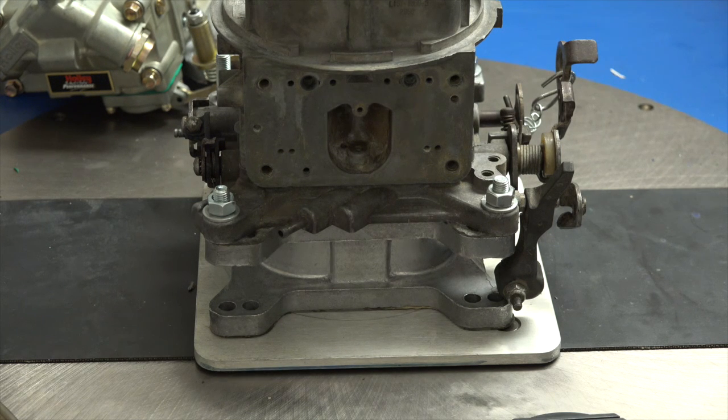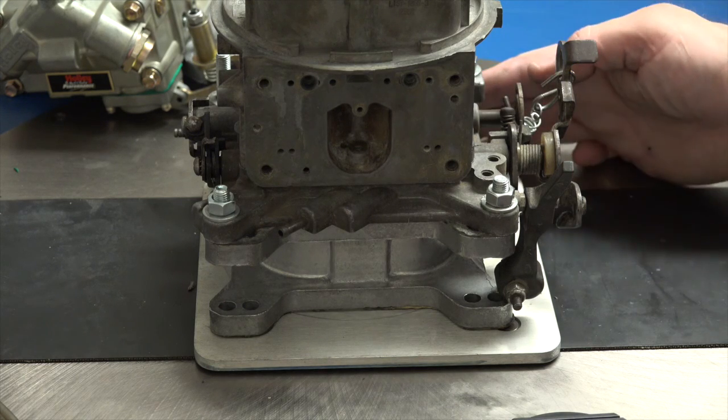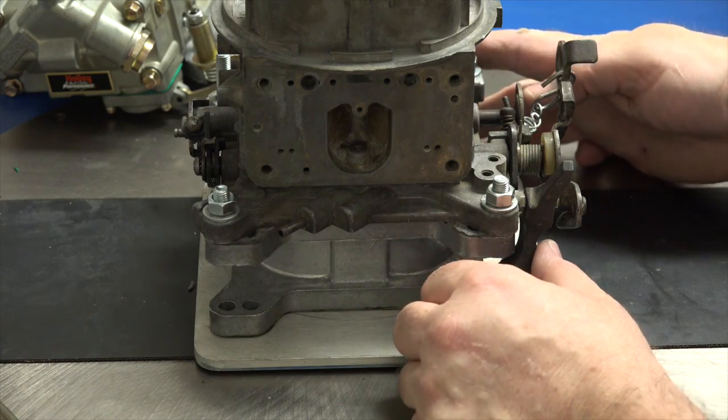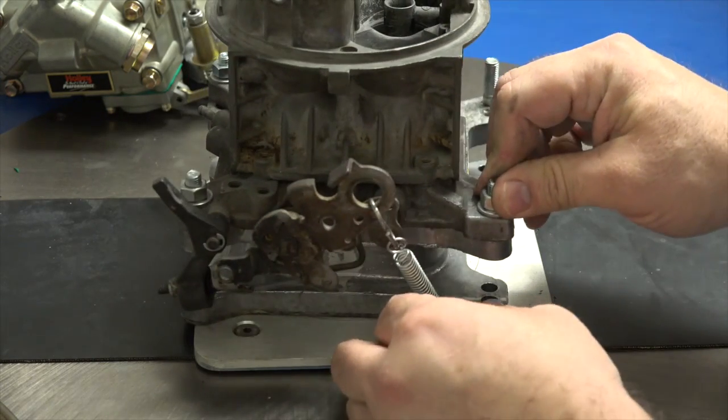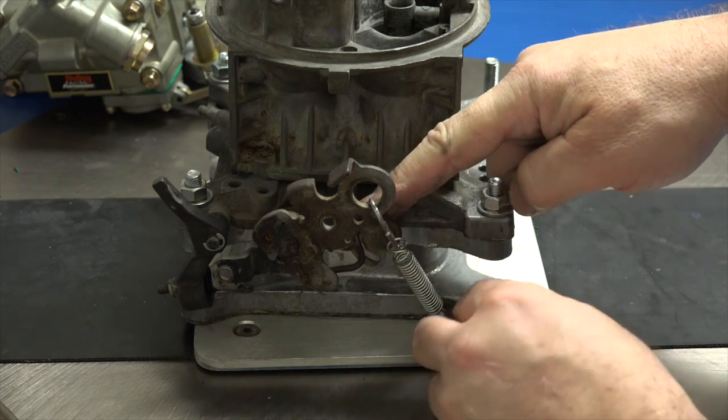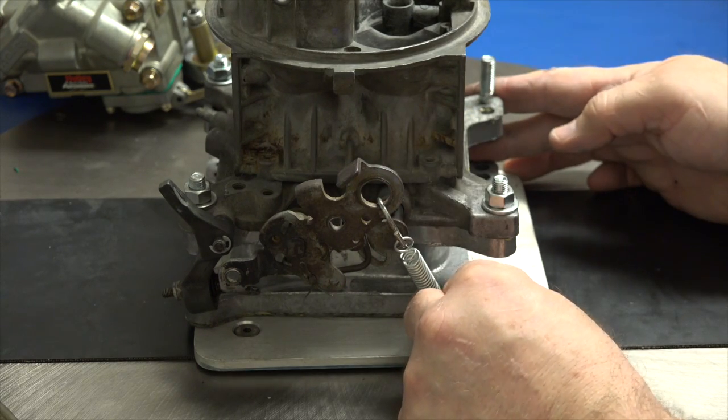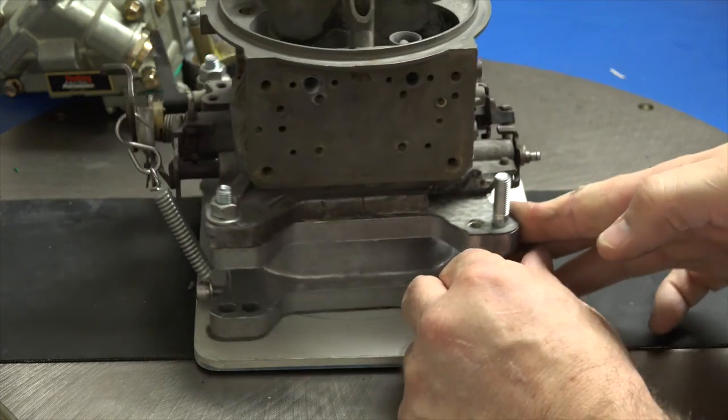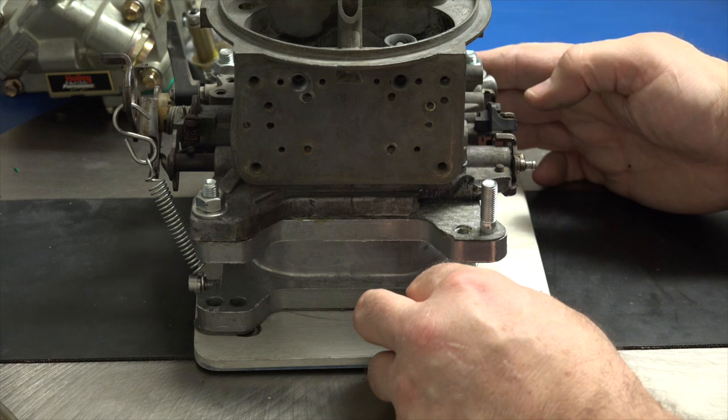So if I turn the flow bench on, I can leave it stabilized. I'm going to spin it now. Now I've just measured the hole on the primary throttle side. Moving it clockwise like this, I'm now measuring the secondary hole on the throttle side. Notice I had to open the secondary throttle plate. This is a vacuum secondary carburetor.